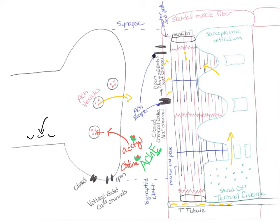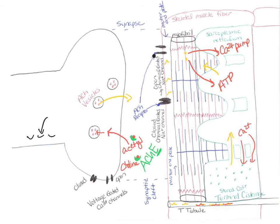The second thing is that the sarcoplasmic reticulum is going to reabsorb those calcium ions. However, it takes ATP to do that — there is a calcium pump that will pump the calcium back up into the sarcoplasmic reticulum, and then the calcium will move back into the terminal cisternae where it will be stored until another action potential comes down the T-tubule. Since there's no more calcium, the tropomyosin is going to cover up those active sites, there will be no more cross bridges formed, the contraction ends, and muscle relaxation begins.